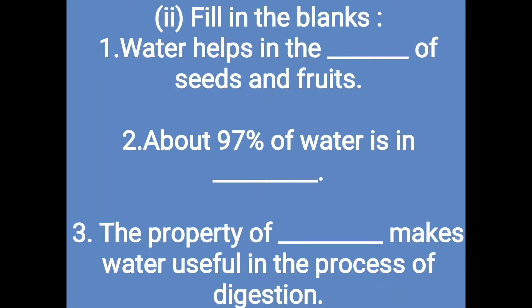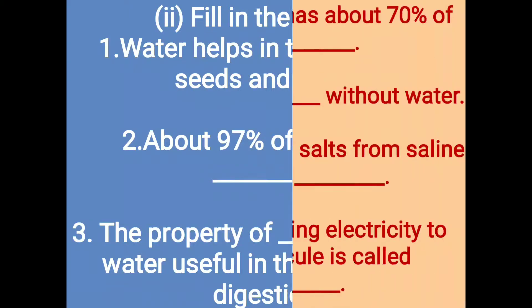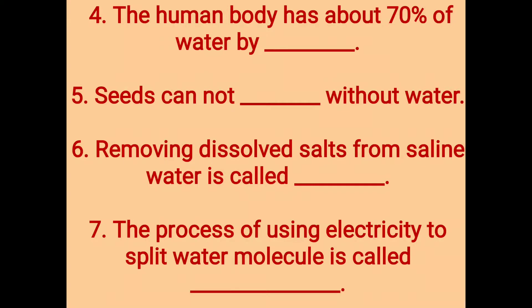Third: the property of water that makes it useful in the process of digestion. The property of fluidity — you can write fluidity and solubility — makes water useful for the process of digestion. Fourth: the human body has about 70% water, and it is by weight, not by volume.